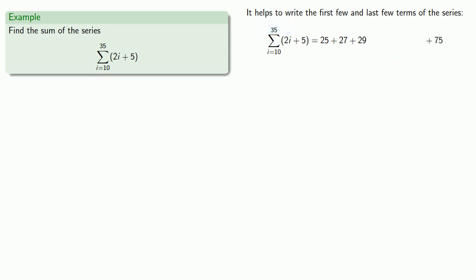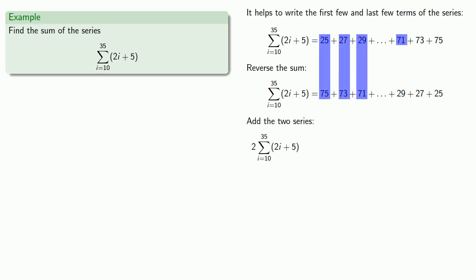And the term before it is going to correspond to i equals 34. Now if I reverse the sum, then add down the columns, we see that every pair of terms adds to 100. So twice the sum of the series is the sum of a whole lot of hundreds.